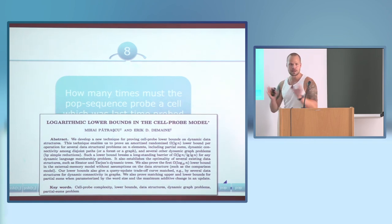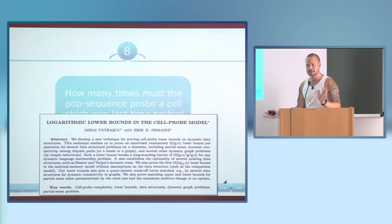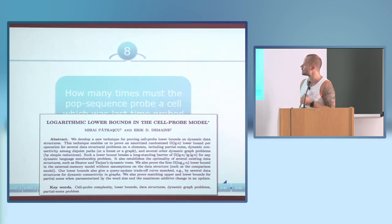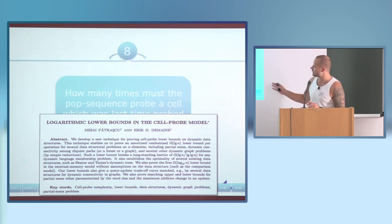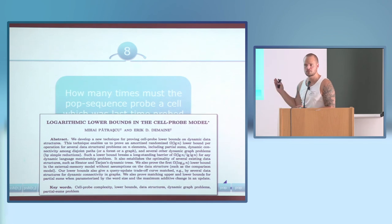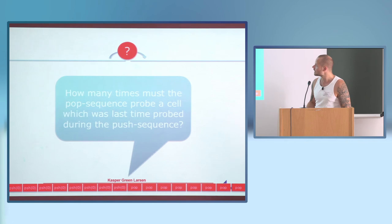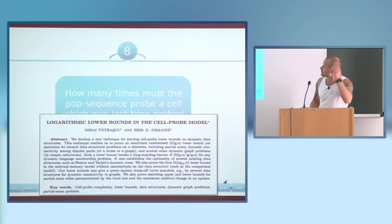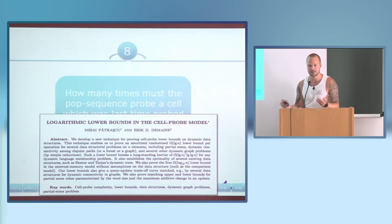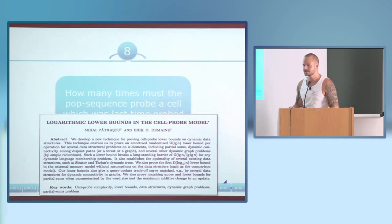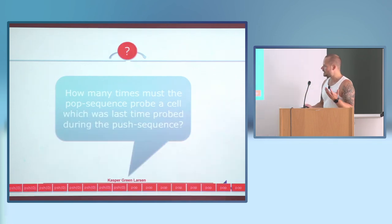This idea of measuring probes and the information transferred between parts of the sequence originates in the data structure lower bound paper by Mihai Pǎtraşcu and Eric Demaine — it's called the information transfer method, usually used to prove log N lower bounds for data structures without any obliviousness assumption. Now we have to use obliviousness for something, because otherwise you're not going to get a higher lower bound — stacks are easy if you're not oblivious.